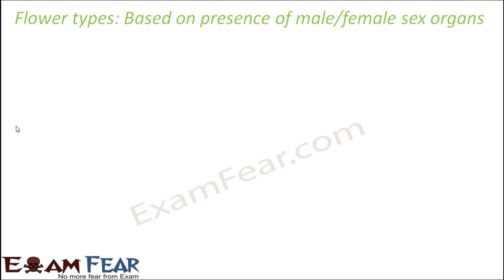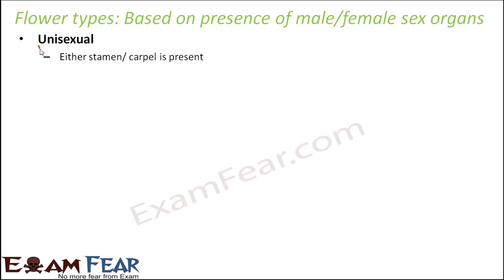Let us start with flower types based on presence of male or female sex organs. Broadly, flowers are classified into two types: unisexual and bisexual. The word 'uni' itself means one, so that means either stamen or carpel is present — either the male sex organ or the female sex organ — but not both. That type of flower is called a unisexual flower.